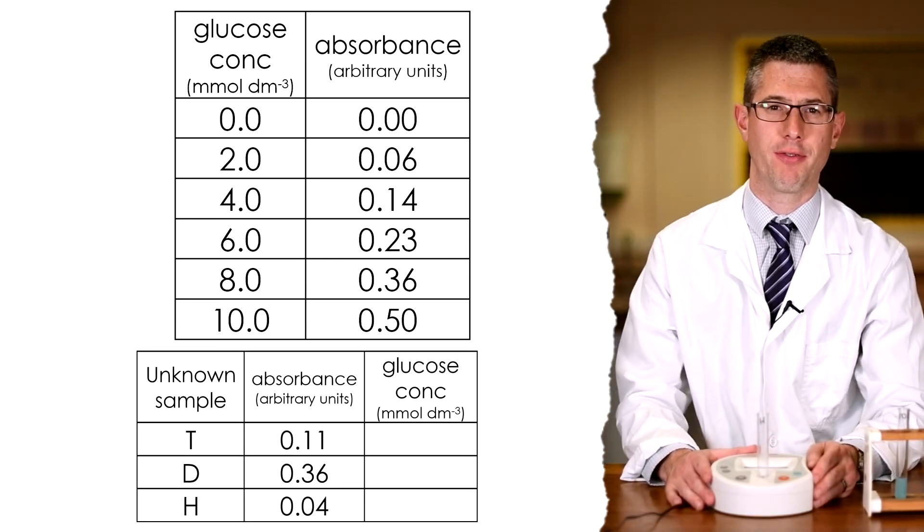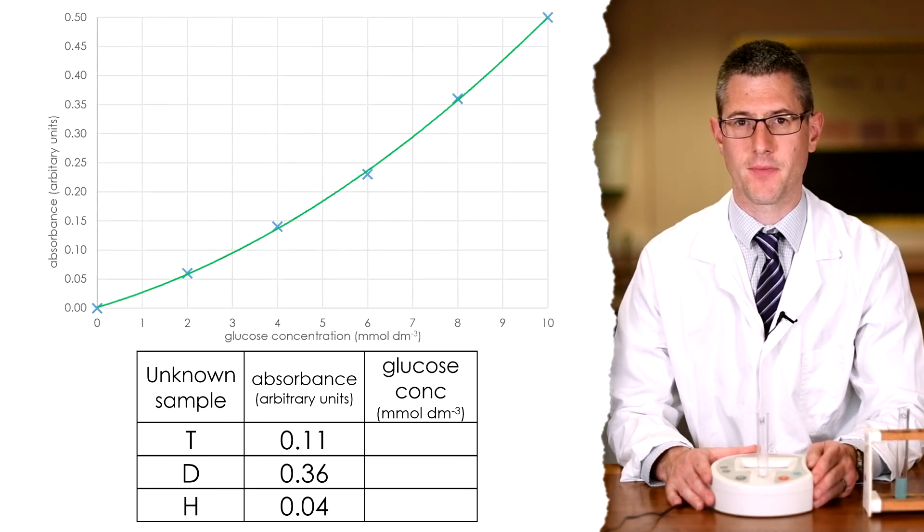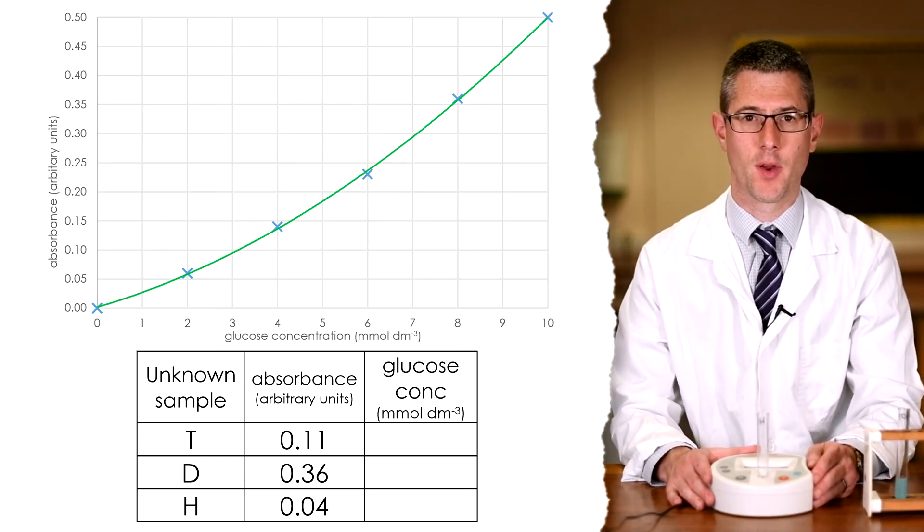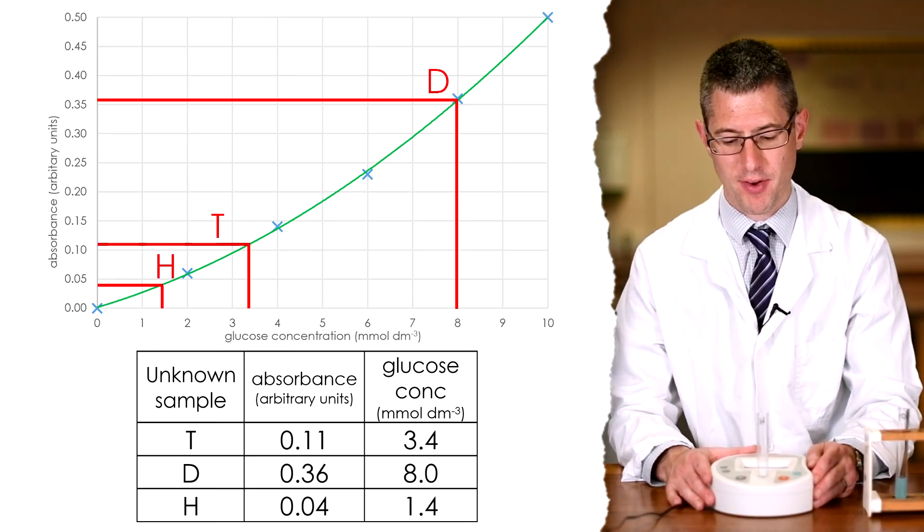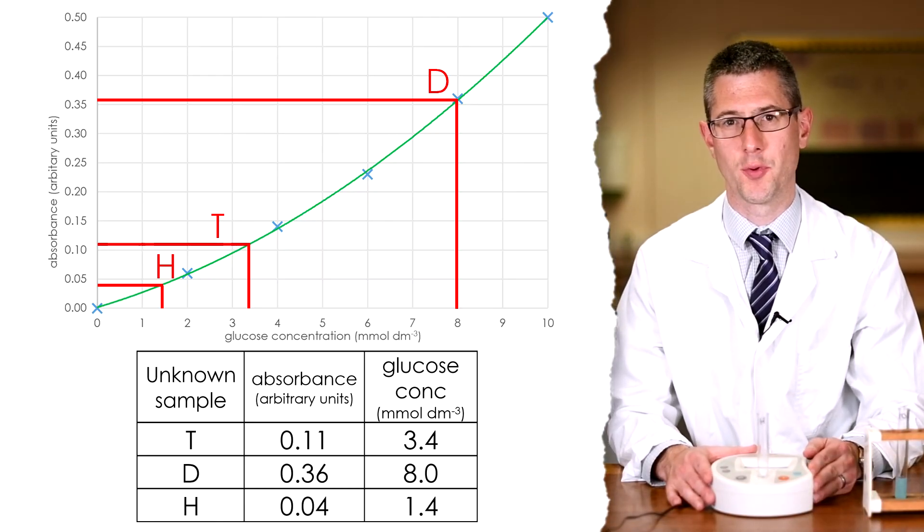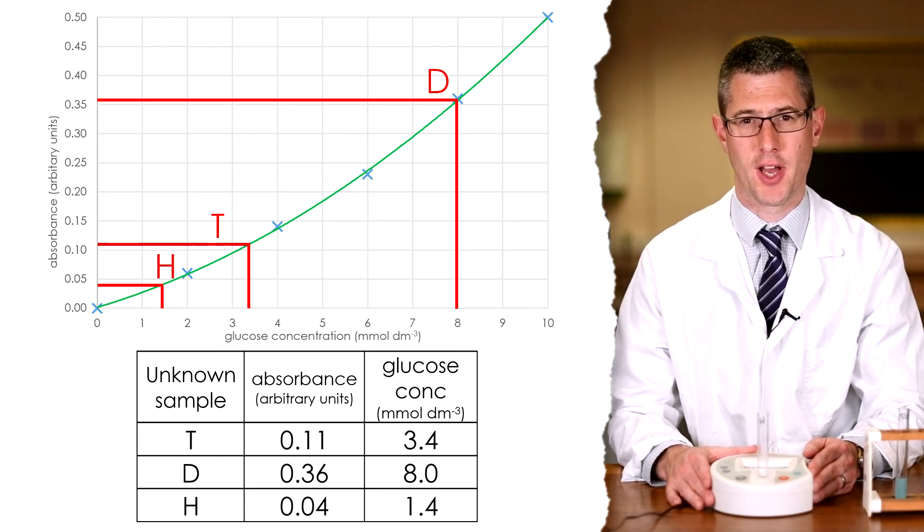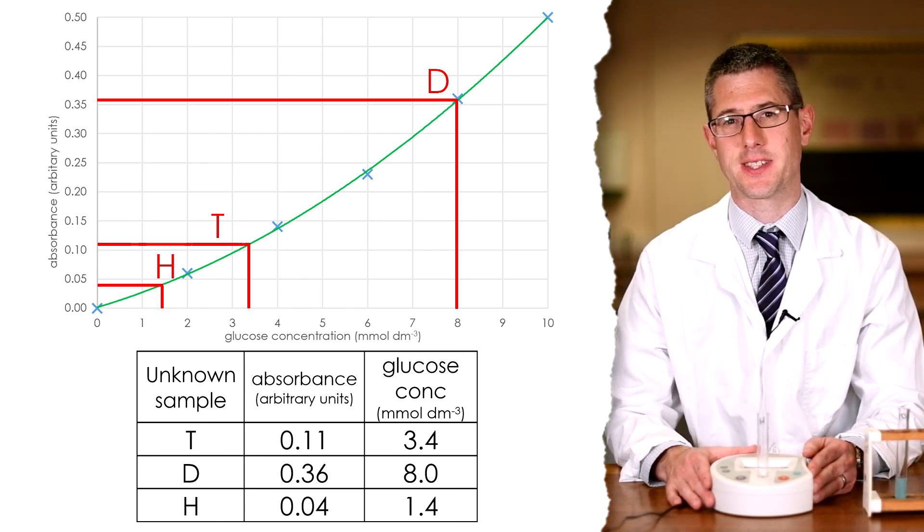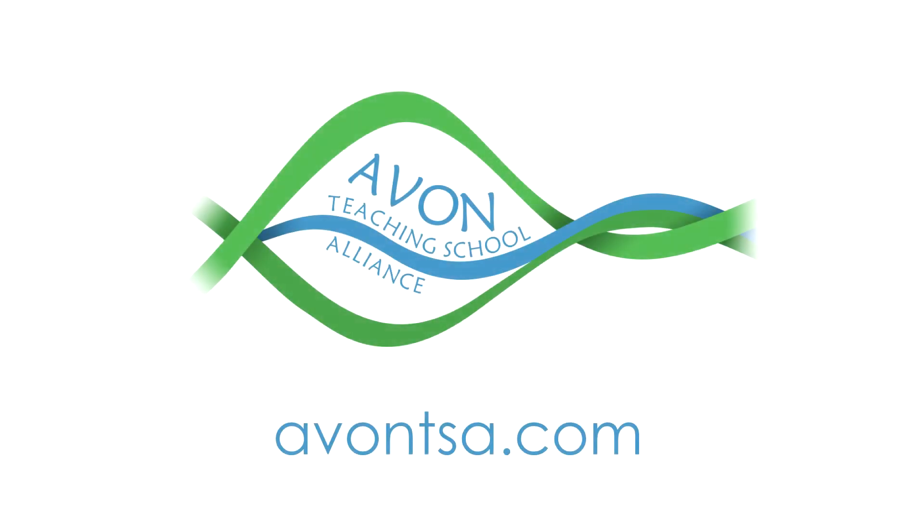So known glucose concentrations along the x axis, absorbance readings up the y axis. We then plot a calibration curve from that data. And using that calibration curve, we can take the absorbance readings from our urine samples and read them off the graph from the absorbance readings across the line of best fit, down to the x axis. And the reading on the x axis will give us an estimate of the concentration of glucose found in the urine.